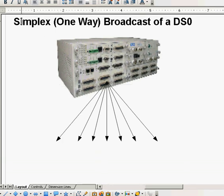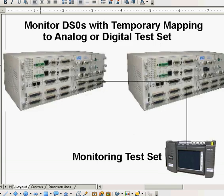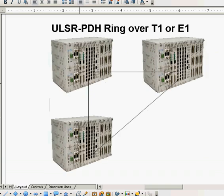We might have a simplex one-way broadcast — an RS-232 or an audio channel going out to multiple endpoints. Another application: we may have a T1 coming in to an E&M card and want it to come to a second E&M point so we can monitor it without unplugging any jacks. A third application is the ULSR PDH ring — a SONET-type ring done with T1 and E1 with the loop AM3440.